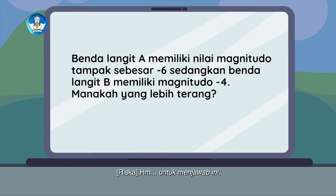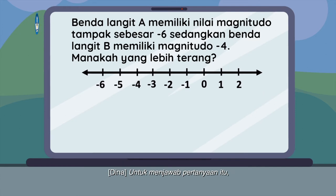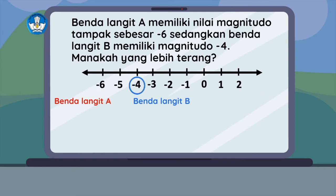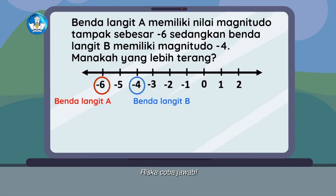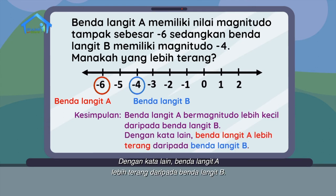Untuk menjawab ini, kita buat garis bilangan bulat dulu. Coba kalian buat di buku kerja. Kita dapat menuliskan bilangan negatif 4 dan negatif 6 pada garis bilangan. Dari ilustrasi ini, dapat disimpulkan bahwa benda langit A bermagnitudo lebih kecil daripada benda langit B. Dengan kata lain, benda langit A lebih terang daripada benda langit B.